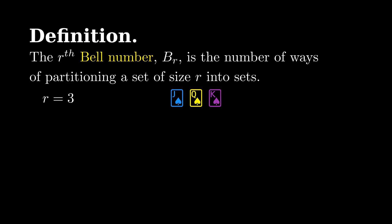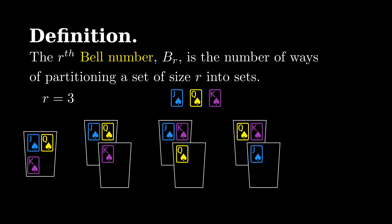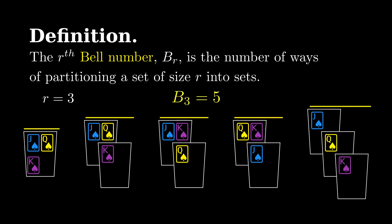Let's say we have three prizes. We can put them all in one bag, or put two in one and one in the other. Three ways of doing that. Or we can put each in its own bag. That means b sub 3 equals 5.